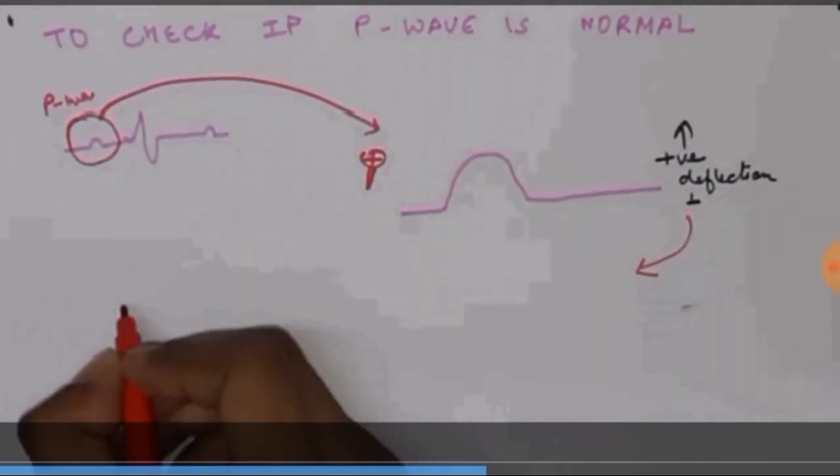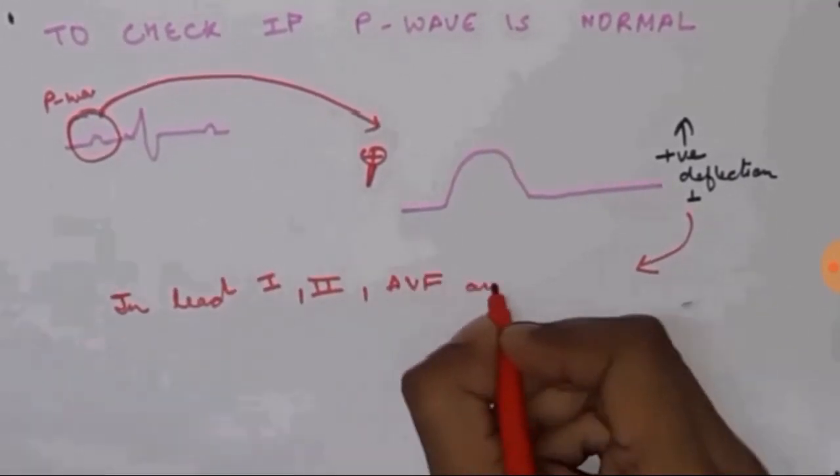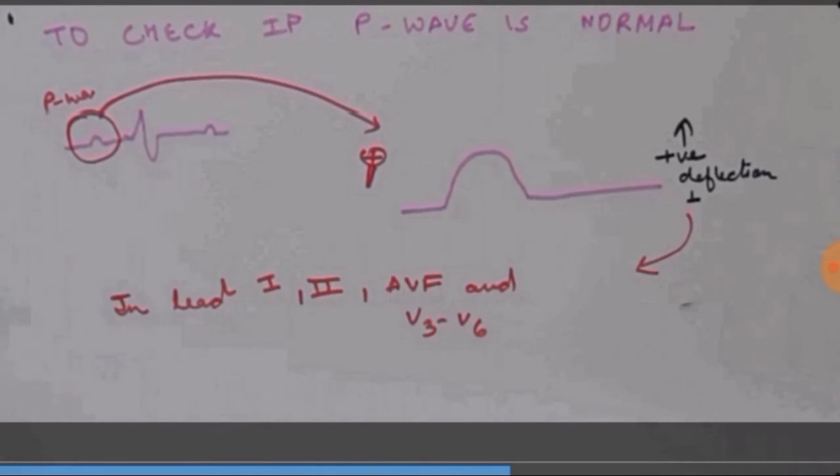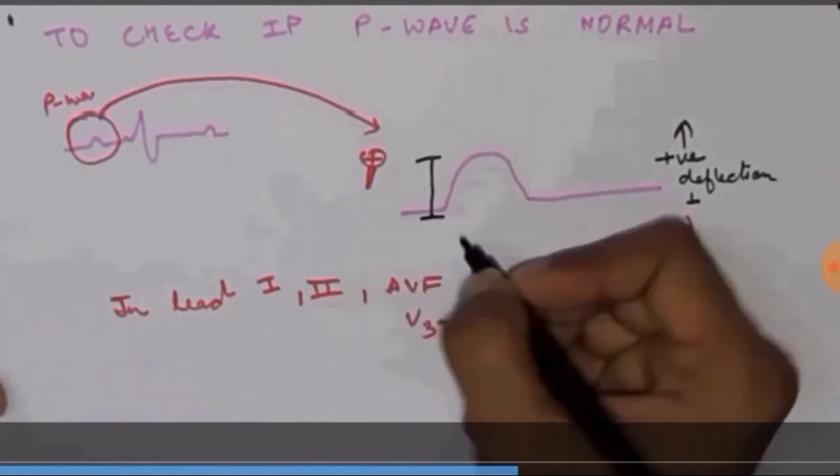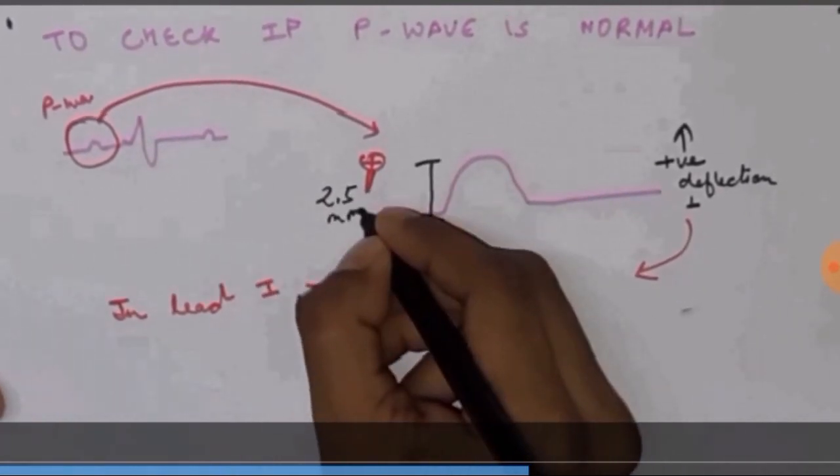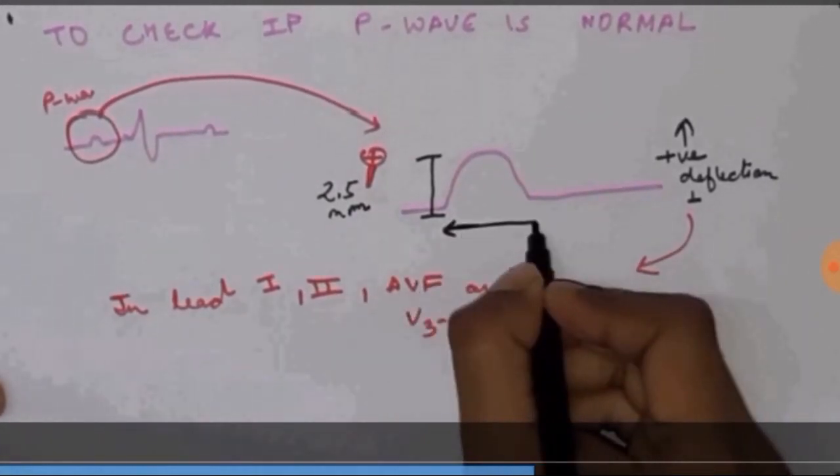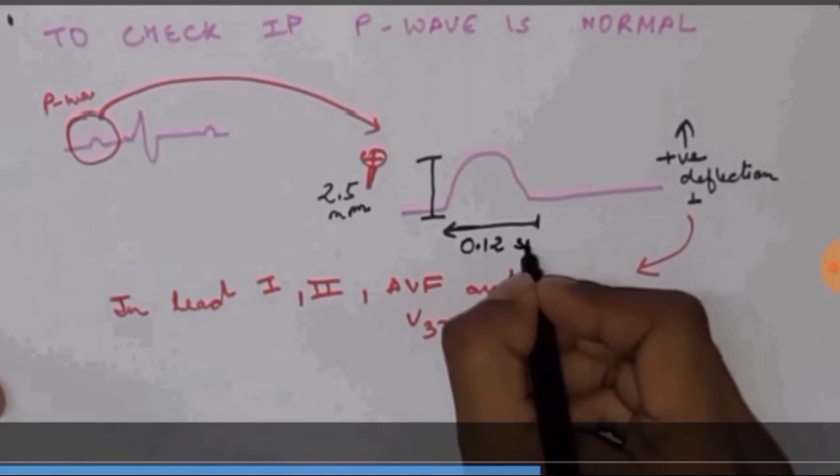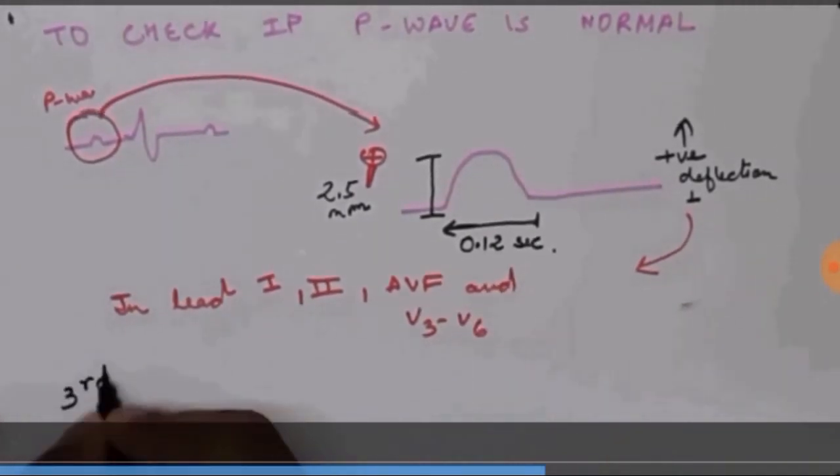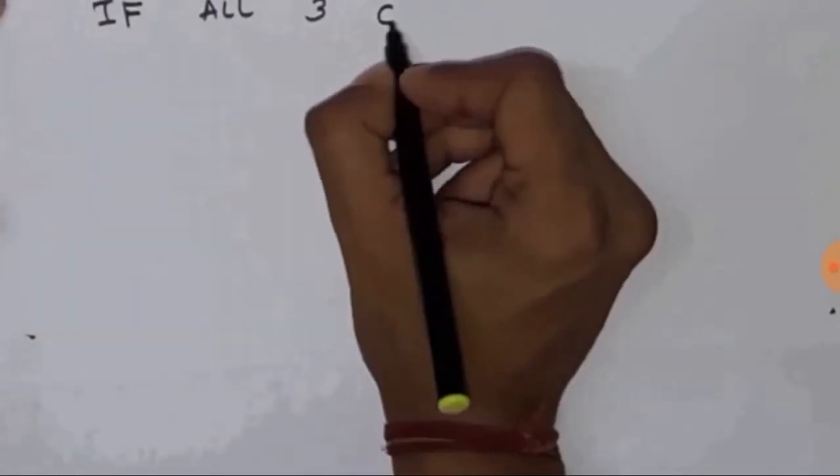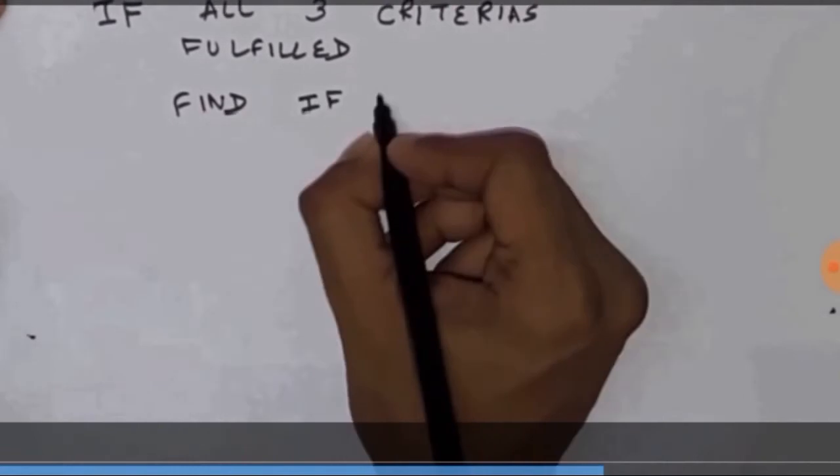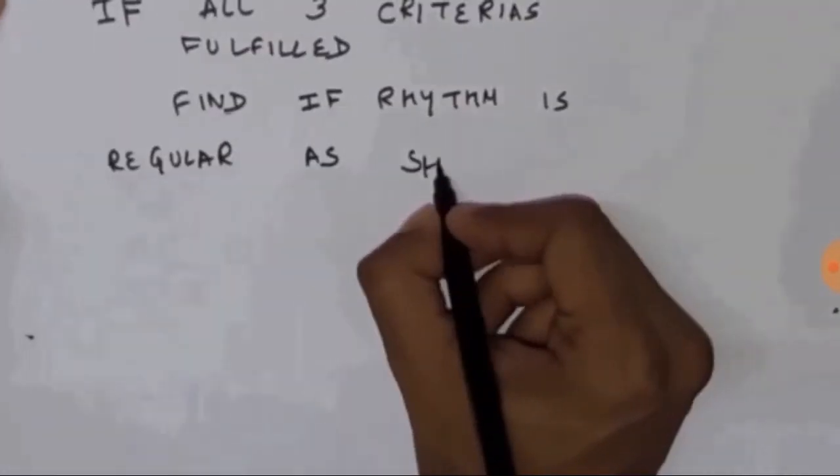If the P wave is positive in the leads 1, 2, AVF, as well as V3 to V6, then we are going to say that it is normal. As well as we are going to measure the height, or in the vertical direction, it measures the voltage. If the height is 2.5 mm, which means it will accommodate two small boxes and a half, and in the horizontal direction, which is for the duration, if it is for the 0.12 second duration, then we are going to say the P wave is normal, so our third criteria is fulfilled, and we are happy now, because all the three criteria are fulfilled, so we are going to just simply find if the rhythm is regular or irregular, like I have shown before.